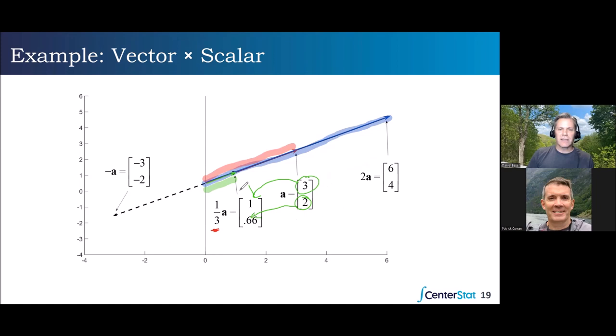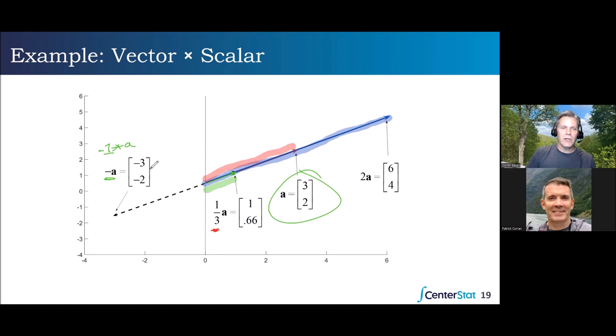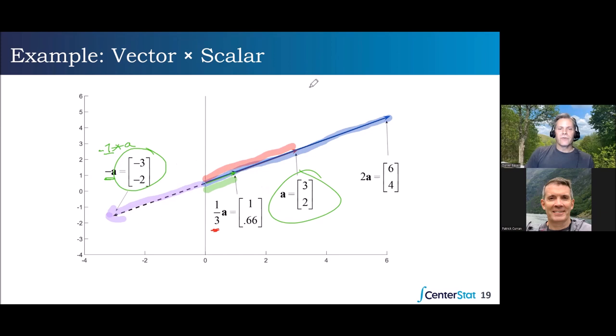It's just simple scalar multiplication, or in this case, you could think of it as scalar division — dividing each element by three. The reflection part: if you have a negative value for that scalar, here we have negative one times a. We take each of the original values — three and two — multiply each by negative one, and get negative three and negative two. Our vector is now going off in the opposite direction to the original.